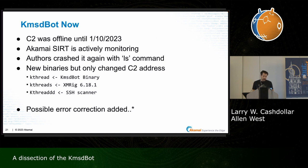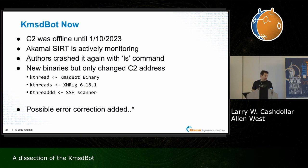The latest on KMSDBot: it was offline in early January until around the 10th or so. We were actively monitoring it, figuring they'd come back — and they did. They changed the binaries but only changed the C2 address, no other updates to the binary. Recently, in the last month or so, it looks like they added some error correction because I noticed them sending malformed commands and the latest client stayed up. It looks like they learned from their mistakes, or perhaps they read one of my blog posts and fixed the botnet. Bruce Schneier actually covered this on his website, talking about how error correction is intrinsic even if you're the bad guy.